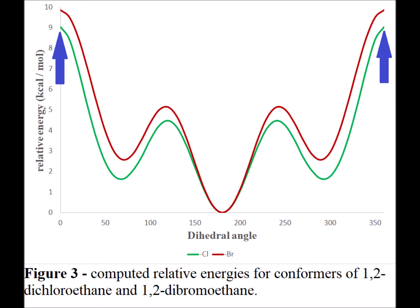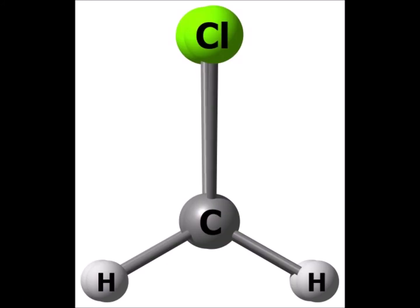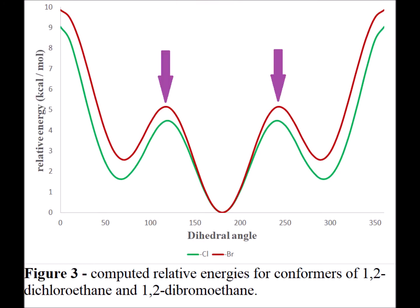For the 1,2-dichloro and 1,2-dibromo, there is one global maximum which occurs at a dihedral angle of 0 and 360 degrees. This corresponds to a fully eclipsed conformation where the chlorine atoms eclipse each other. There are other relative maxima at dihedral angles of 120 or 240 degrees — a partially eclipsed conformation, but not the fully eclipsed — where chlorine and hydrogen eclipse each other.